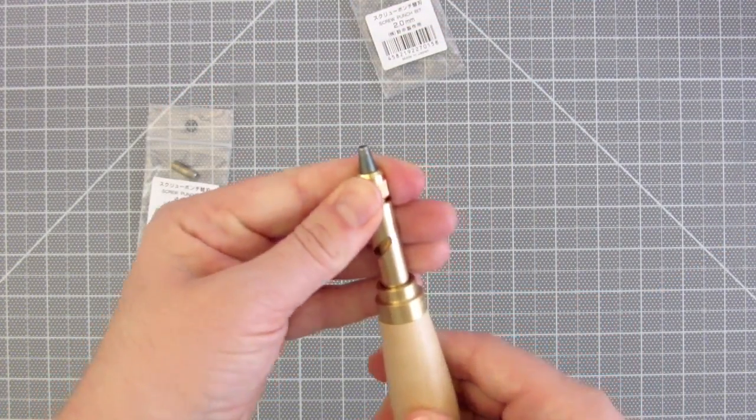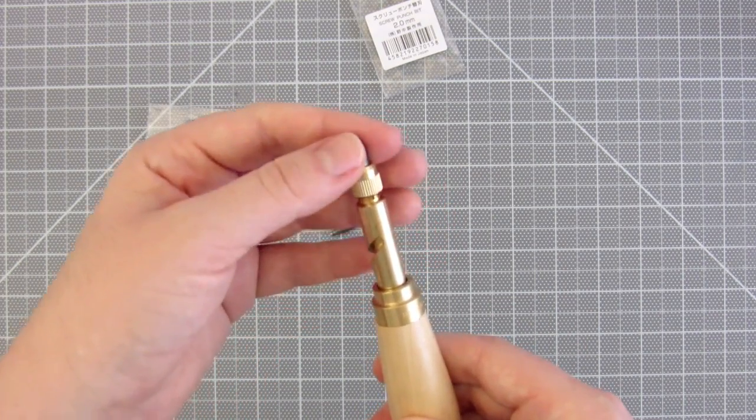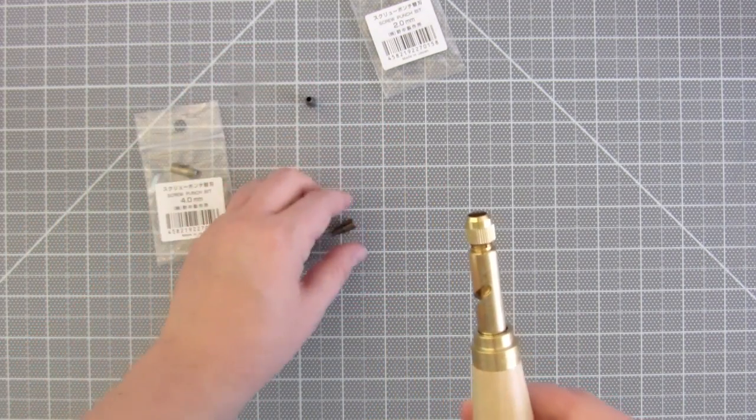You can change the hole size by changing out the bit. Just loosen this, remove the bit, and tighten the new bit in.